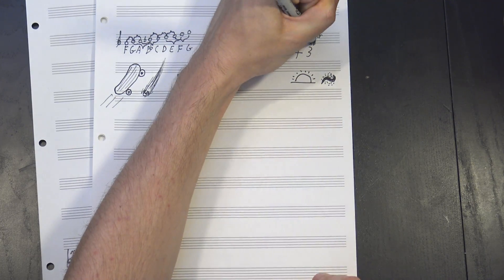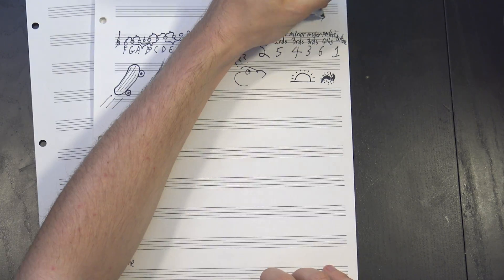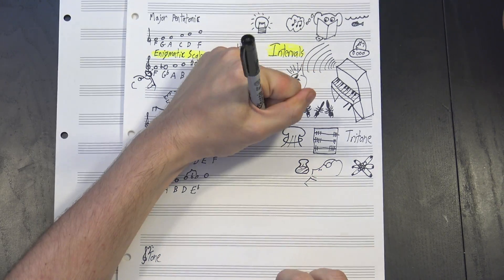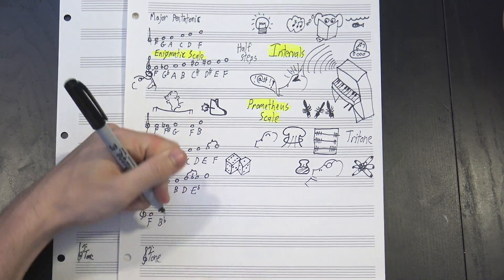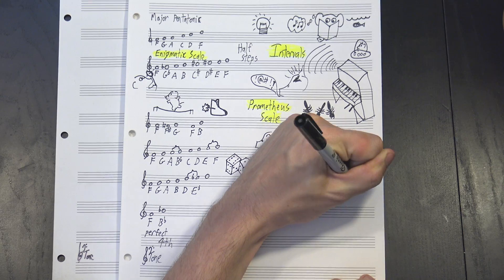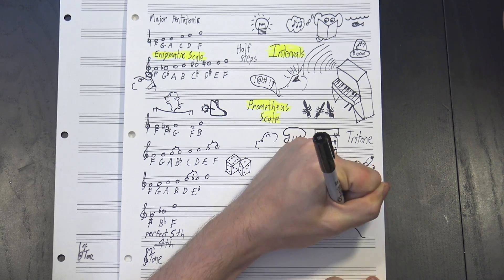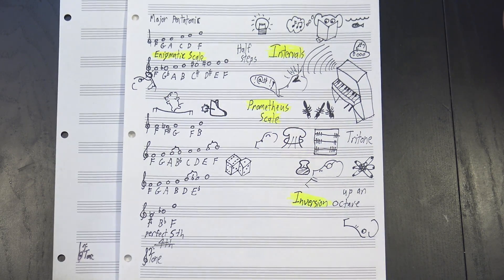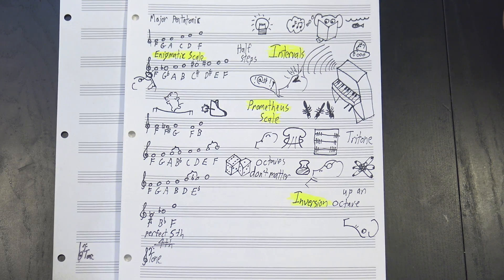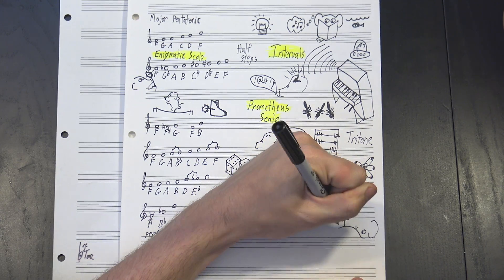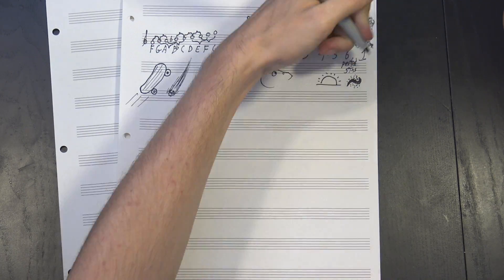Going through the rest, we've got three major thirds, six perfect fourths, and a single tritone. But why stop there? Don't we care how many perfect fifths there are? Well, yeah, we do, but we can actually cheat here. This is F to Bb, and it's a perfect fourth. If we take the F and bring it up an octave, though, we get Bb to F, which is a perfect fifth. Flipping an interval upside down like this is called inversion, and since we already said we don't care about octaves, we can see that for every perfect fourth the scale has, it also has a perfect fifth, and vice versa, so we can just reuse this number to represent both of them.